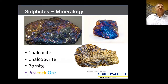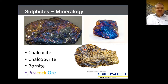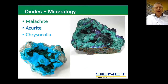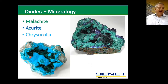The mineralogy of the sulfide ore — the main minerals are chalcocite, which is the silver mineral; chalcopyrite, which is the gold; and bornite, which is the multiple colors of the ore, and this has led to it being called peacock ore. The oxide mineralogy — the predominant minerals are malachite, which is the green mineral. Azurite are the light blue minerals, and chrysocolla are the light blue silicates.